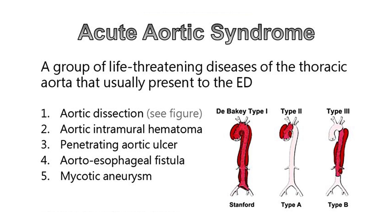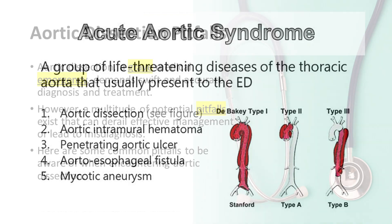Acute aortic dissection is the most common and well-known form of acute aortic syndrome, accounting for approximately 60-70% of cases. It occurs when there is a tear in the intimal layer of the aortic wall, allowing blood to flow into the media layer and create a false lumen.